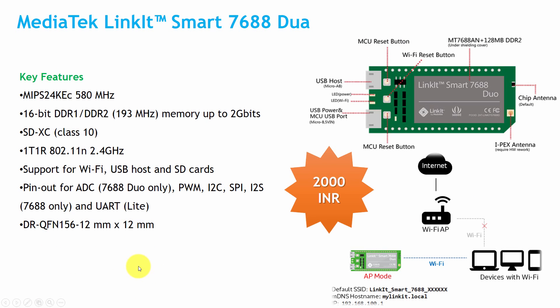The next board is the MediaTek LinkIt Smart 7688 Duo. It has a MIPS 24KEc 580MHz microcontroller, 16-bit DDR1 and DDR2 SRAM with a maximum speed of 193MHz, and its price is almost 2,000 Rupees. This module supports Wi-Fi, USB host, and SD card. Available pins to users include ADC, PWM, I2C, SPI, I2S, and UART, so users can interface this module to the external world.